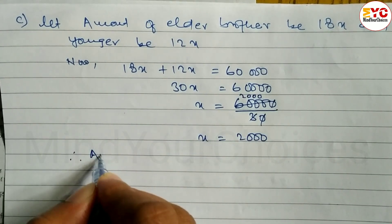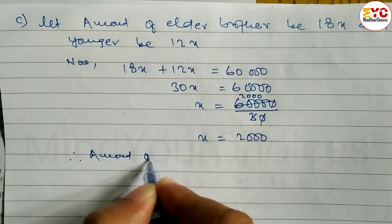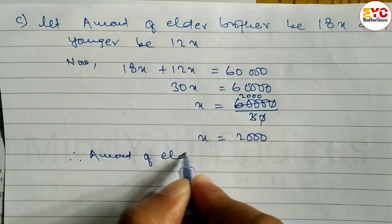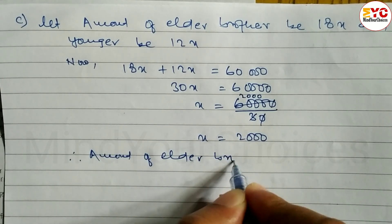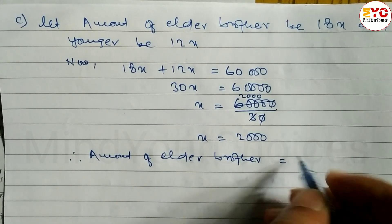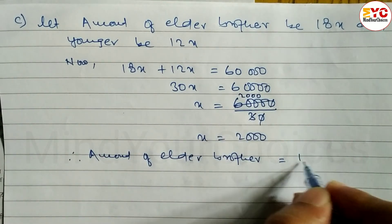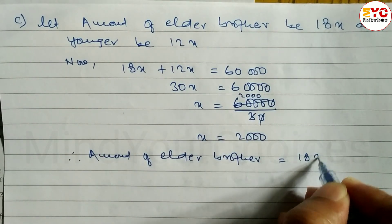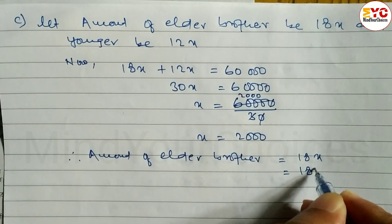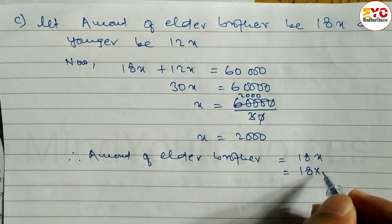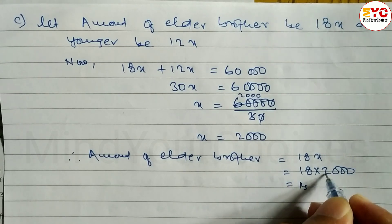Therefore, the amount of the elder brother is 18x. Substituting x = 2,000, we get 18 × 2,000, which equals Rs. 36,000.